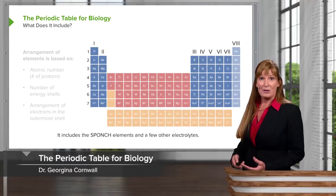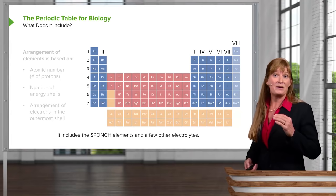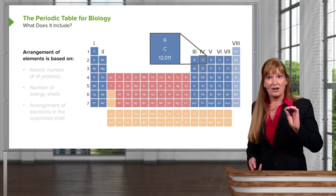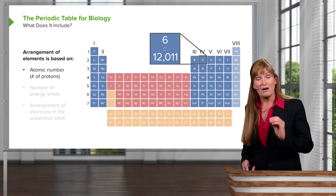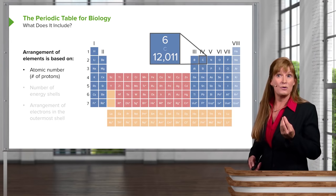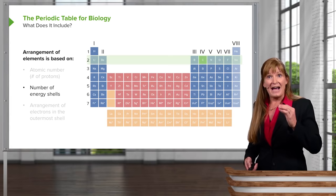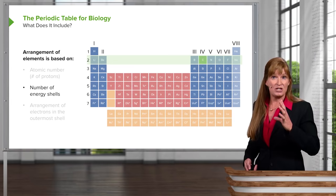When A loses an electron and gives it to B, then B becomes more negative. Because it's become more negative, we call it reduced — so the process of gaining an electron is called reduction. The other molecule is going to lose an electron: A is losing an electron, and thus it becomes more positive. When an atom becomes more positive, we call it oxidized. So oxidation is the process of losing an electron, and reduction is the case of gaining an electron. These two reactions can be paired to be called redox reactions. Generally, when one thing loses an electron, another thing gains an electron.